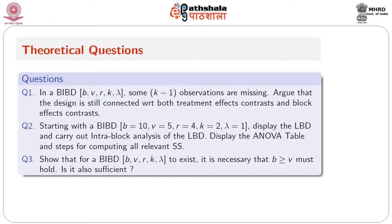The ANOVA table and steps for computing all elements are now pretty clear. The third exercise: we need to show that for a BIBD with these parameters to exist, it is necessary that B ≥ V. This inequality is known as Fisher's inequality. An algebraic and statistical proof appears in Fisher's original book — the statistical argument using variance being greater than or equal to zero leads to the inequality B ≥ V.